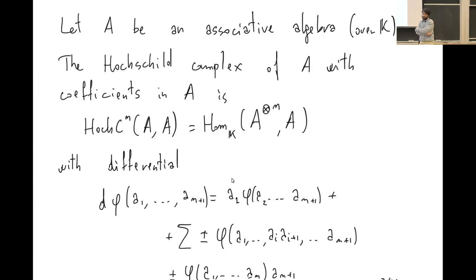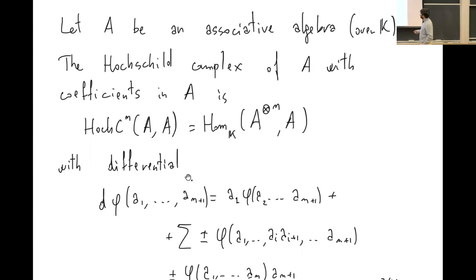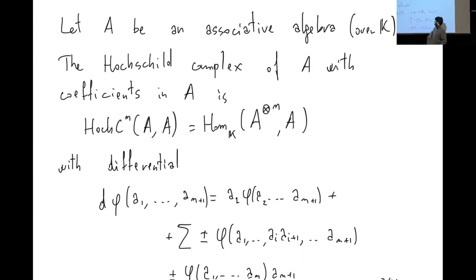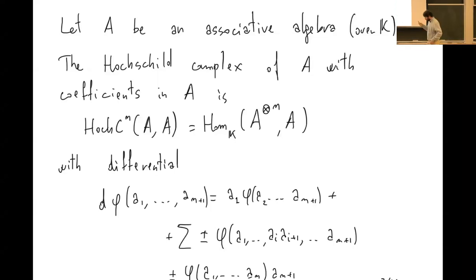The differential takes an n-multilinear map and produces an n+1 multilinear map. Given n+1 elements, we use the multiplication in A to contract any adjacent pair — either an internal pair where two elements are next to each other, or we use the fact that A is also an A-module and multiply the first element on the left and the last one on the right, using the fact that A is an A-A bimodule.